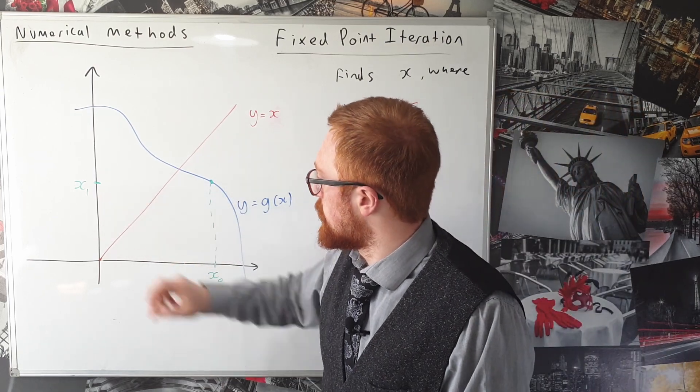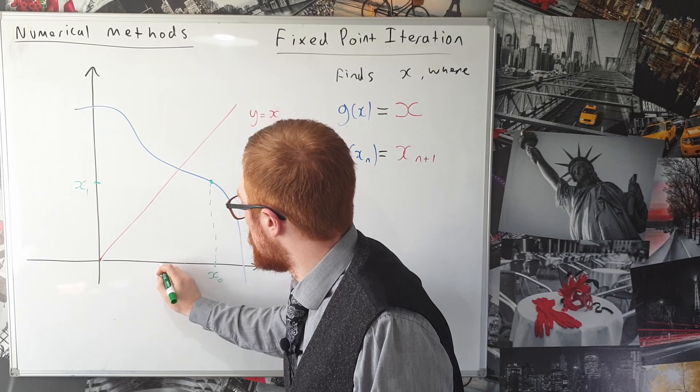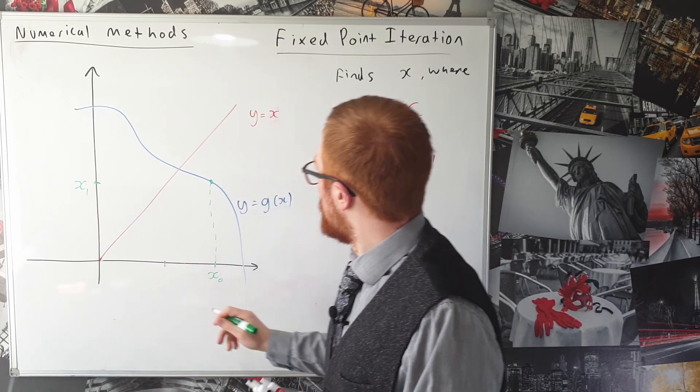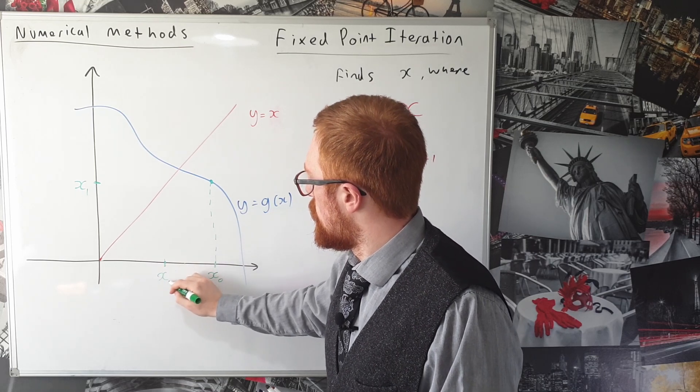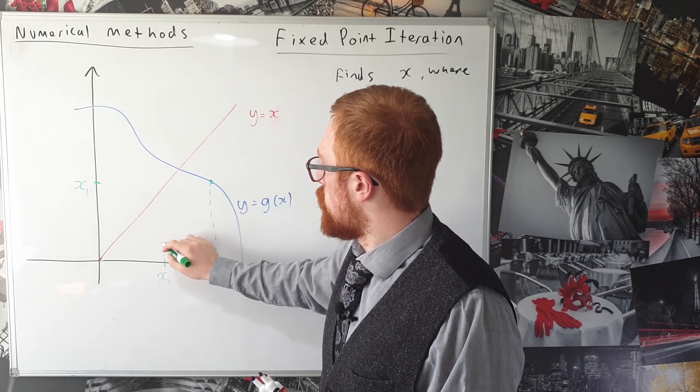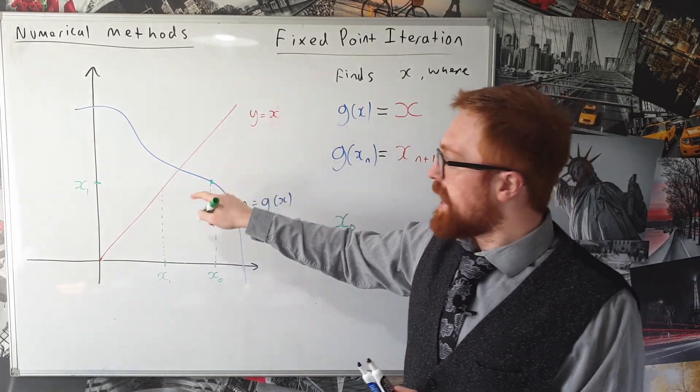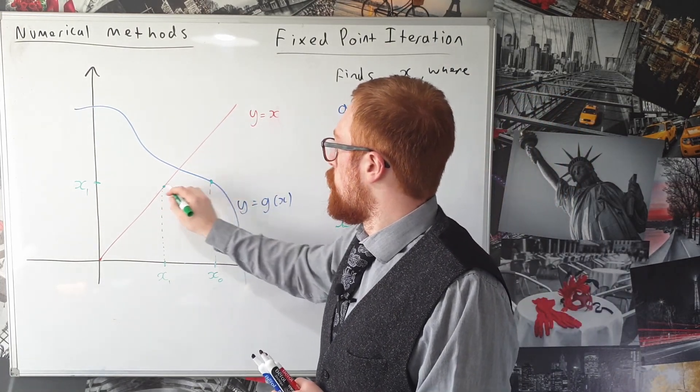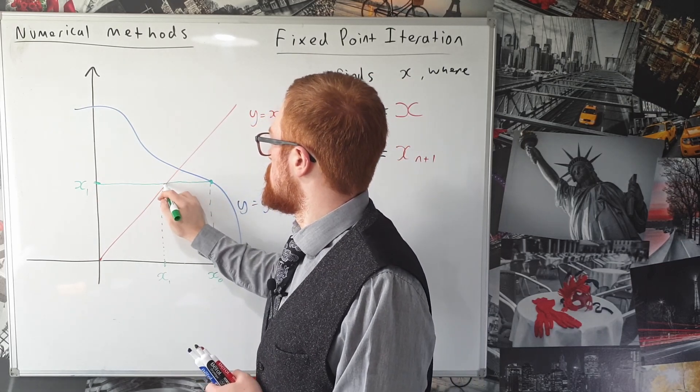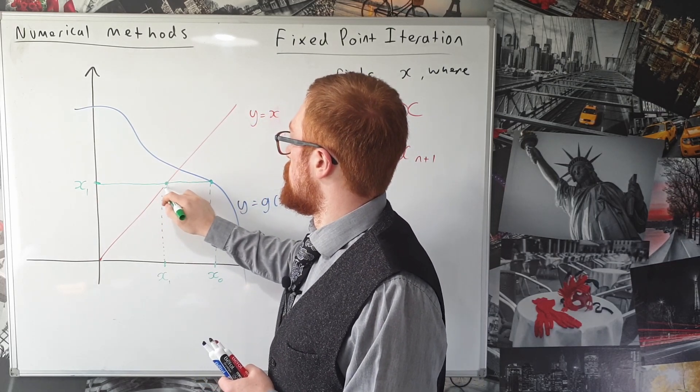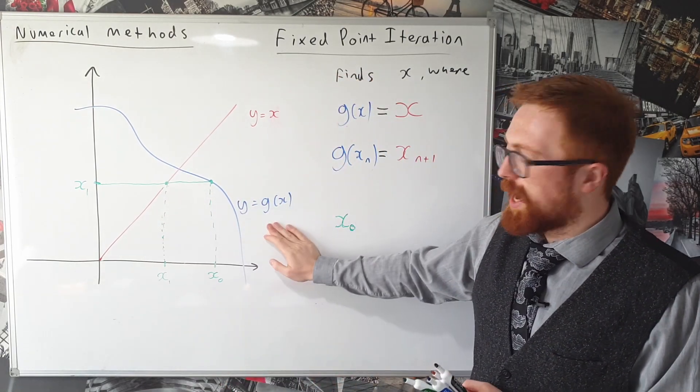So let's have a look at this x_1. Now if I were to put that x_1 in here and what I'm actually doing is if I draw up from this x_1 it meets this line y equals x at the same y coordinate as we have before.